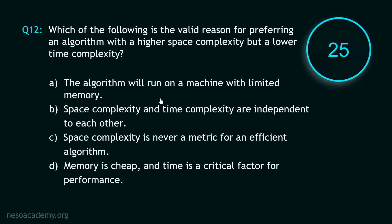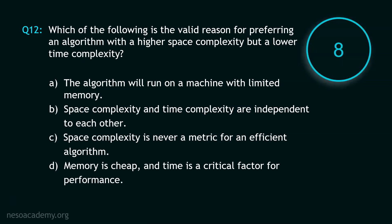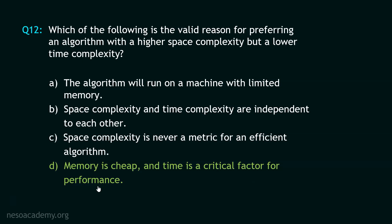Now let's move to question number 12, and your time starts now. Stop. The correct option: when would you prefer higher space complexity and a lower time complexity for an algorithm? When memory is cheap and time is a critical factor for performance — this is the valid reason for preferring an algorithm with higher space complexity but lower time complexity.